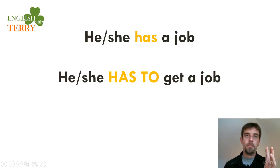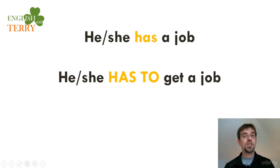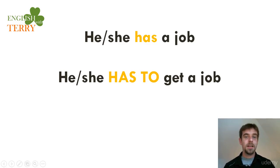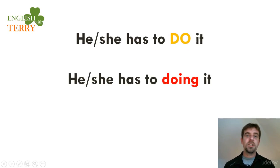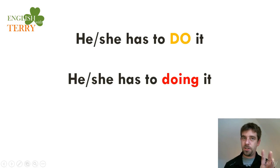For example, a job. Do you have a job? He or she has a job, or he or she has to get a job. He or she has to do it, but never he or she has to doing it. Just a basic part of the form.